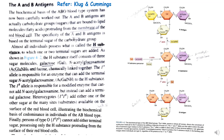In the O blood group (IOIO), neither terminal sugar can be added to the H substance, so no antigen is formed. This is the biochemical basis of ABO blood group. For more detail, please read Klug and Cummings, as this picture and text are taken from that book.